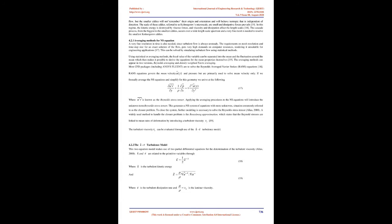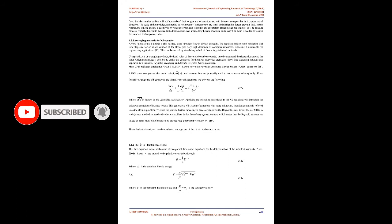Applying the averaging procedures to the NS equations introduces the unknown term known as the Reynolds stress tensor. This generates a NS system of equations with more unknowns — a situation commonly referred to as the closure problem. To close the system, further modeling is necessary to solve the Reynolds stress tensor. A widely used method to handle the closure problem is the Boussinesq approximation, which states that the Reynolds stresses are linked to mean rates of deformation by introducing a turbulent viscosity.